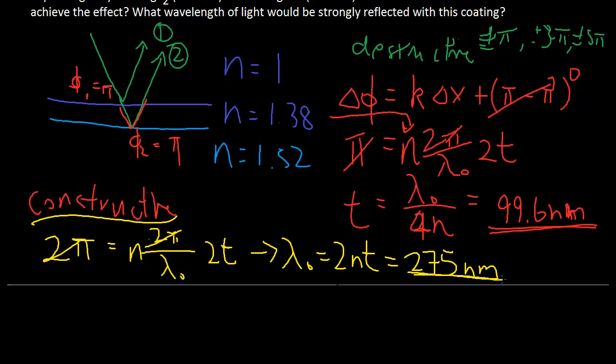We're minimizing the frequency where our eyes are sensitive, in the greens, and we're going to have a little more reflection where our eyes aren't that sensitive. And that's okay, it achieves the effect of an anti-reflective coating.